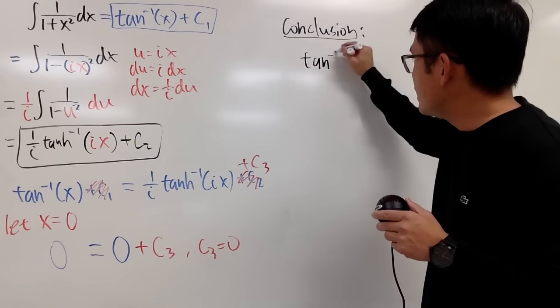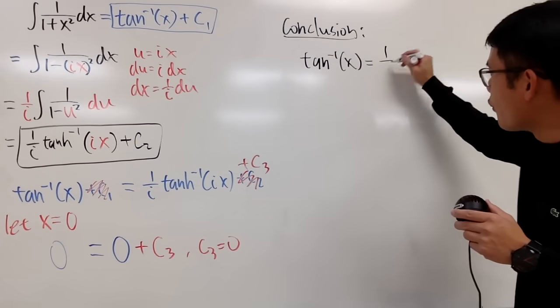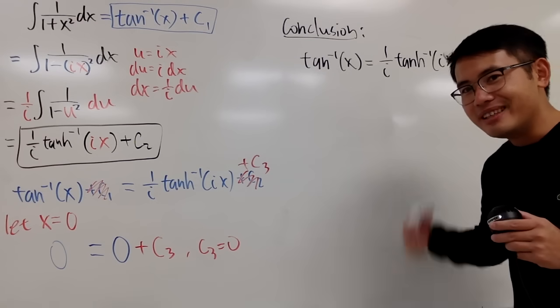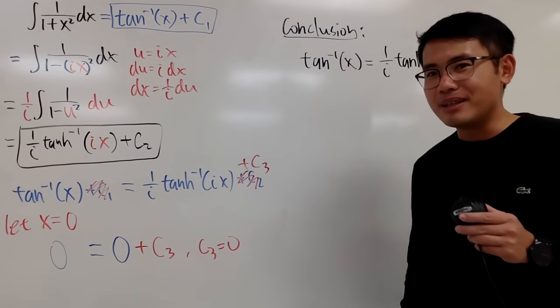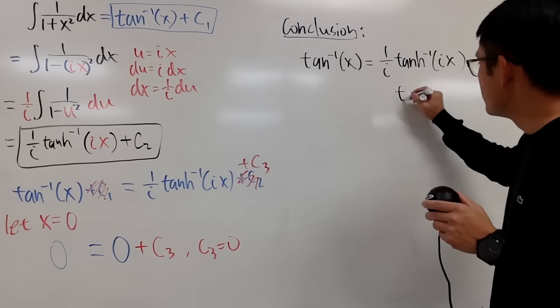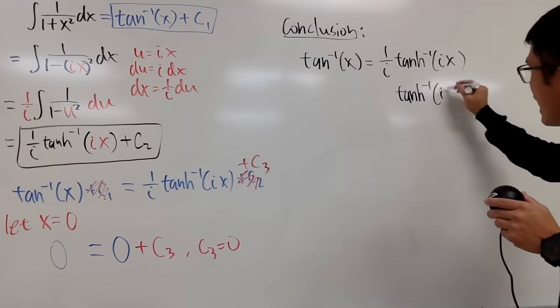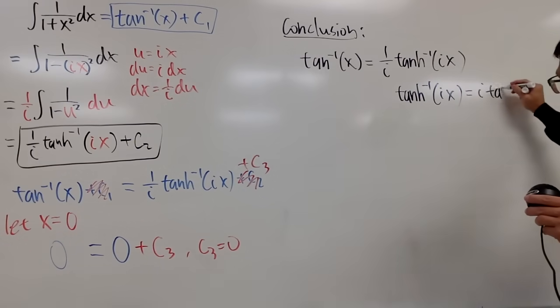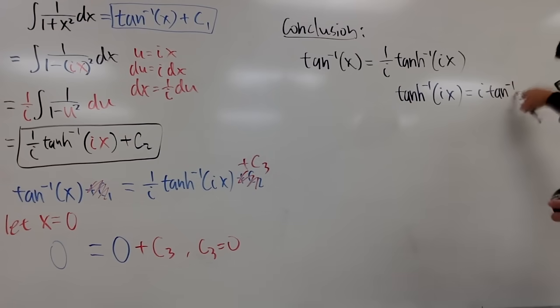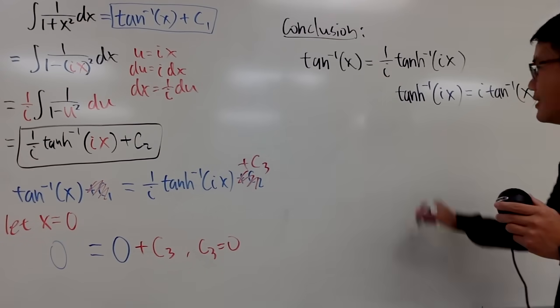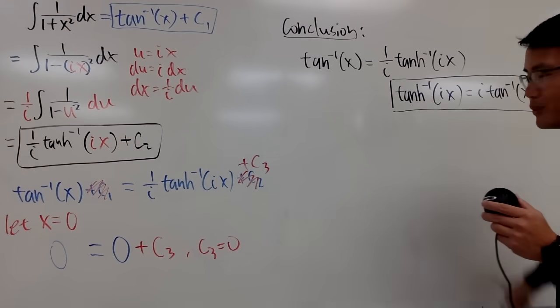So the conclusion is that c3 is 0. That means this is the same as that. Inverse tangent of x is equal to 1 over i times the inverse hyperbolic tangent of ix. This is a really cool identity. But you can make it slightly better because maybe you want to multiply both sides by i so that you can isolate this. The inverse hyperbolic tangent of ix is equal to i times the regular inverse tangent, and the input is x. So it's pretty much like you just take out the i, but you change the hyperbolic to the regular situation.